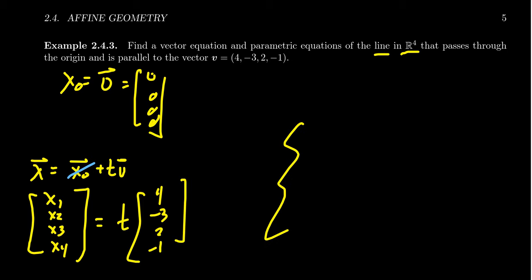If we write this as parametric equations, you're going to get that X1 equals 4T, X2 equals -3T, X3 equals 2T, and finally, X4 equals -T. You can see that lines that pass through the origin are a lot easier to describe than an arbitrary line.